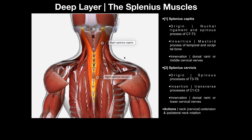This is actually the superficial layer of the deep layer. The superficial layer of the deep layer is composed of what we call the splenius muscles, and there are two: the splenius capitis and the splenius cervicus.